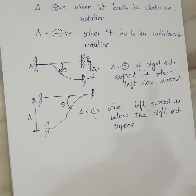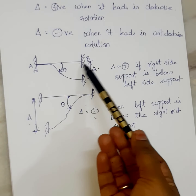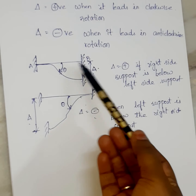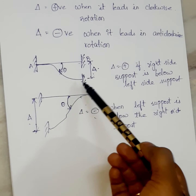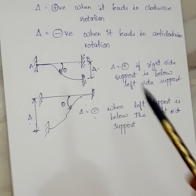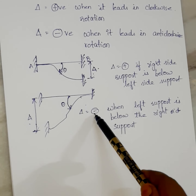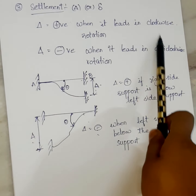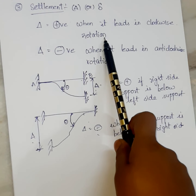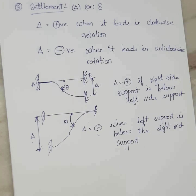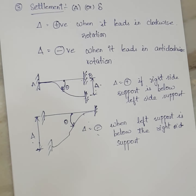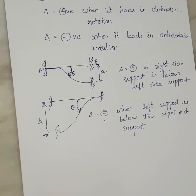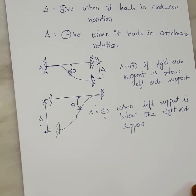When the right hand support is below the left hand support, delta is positive. When clockwise rotation occurs, delta will be positive. When anti-clockwise rotation occurs, delta will be negative. Just remember this: clockwise rotation means delta is positive; anti-clockwise rotation means delta is negative. This is the simple introduction of slope deflection method.